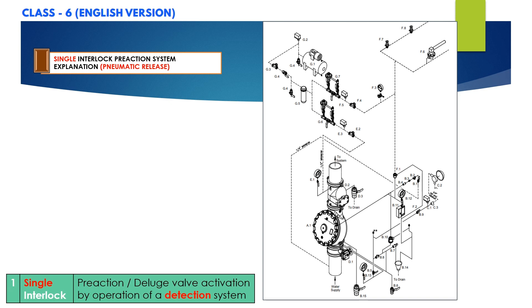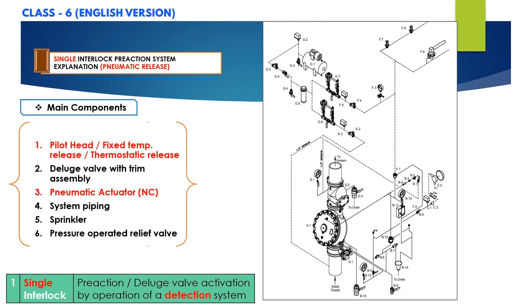Before proceeding, let's look at the system components for pneumatic release type. The main components include a pilot head and fixed temperature release (thermostatic release), which acts as the detection system. Other components such as butterfly valve, check valve, deluge valve, air compressor, pressure switches, pressure gauges are the same as before. However, there will be a pneumatic actuator which is normally closed, since the detection system is pneumatic type.